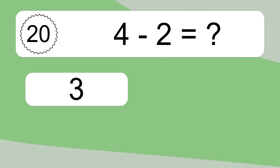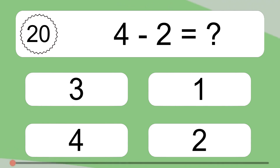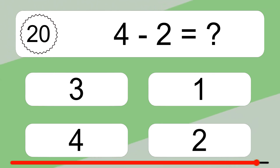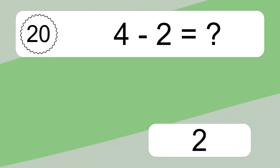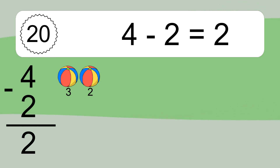4 minus 2 equals what? 4 minus 2 equals 2. Let's count it: 3, 2.